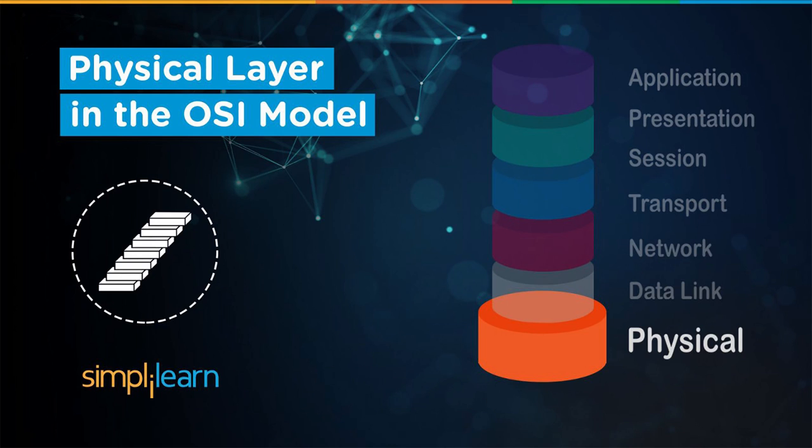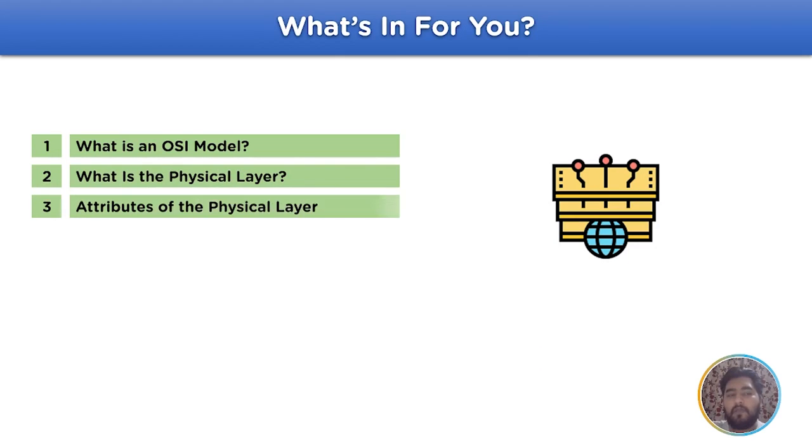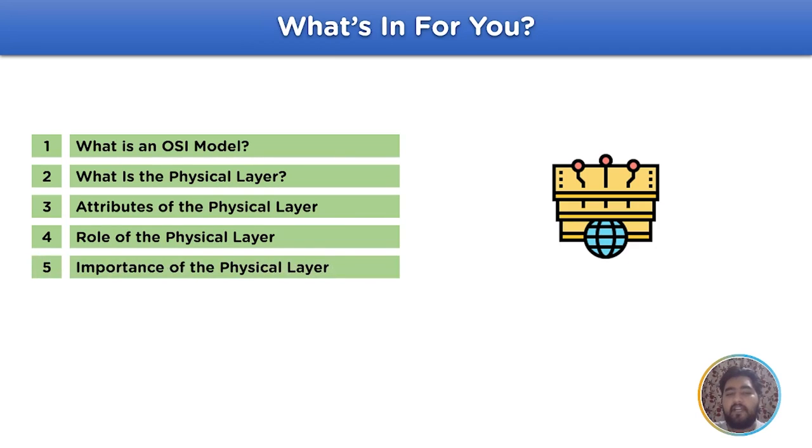Now, without further ado, let's take a look at the agenda for today's session. To begin with, we will look into the structural model of the OSI model, advancing with the core topic that is what is the physical layer in the OSI model, moving on with the attributes of the physical layer. Finally, we will wrap up our session by discussing the critical roles and the importance of physical layer in the OSI model.